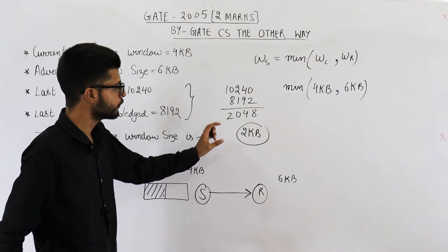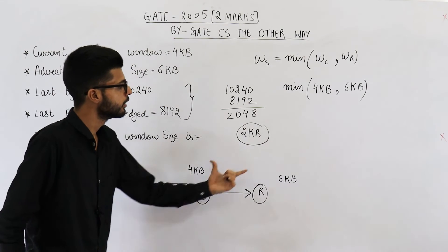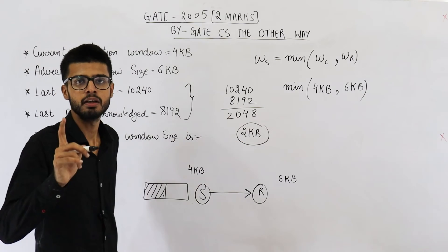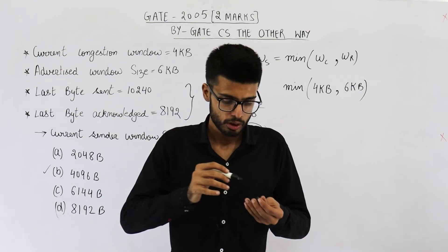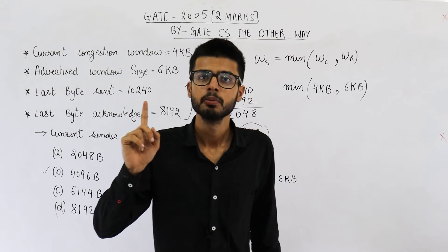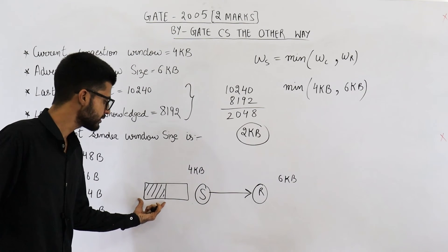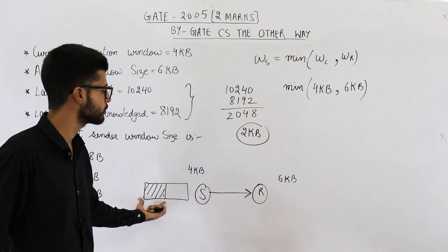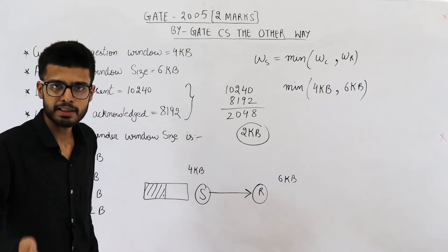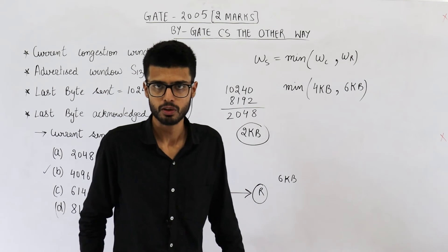So out of total 4 KB, 2 KB of the window is filled with this unacknowledged data. What is present in the window? Window contains all those packets that are transmitted but yet their acknowledgement is not received. So this much data is transmitted and acknowledgement is not received. That means 2 KB of the window is empty. Currently, we can send 2 more KBs without worrying about acknowledgements.